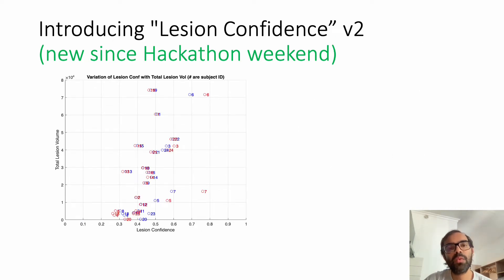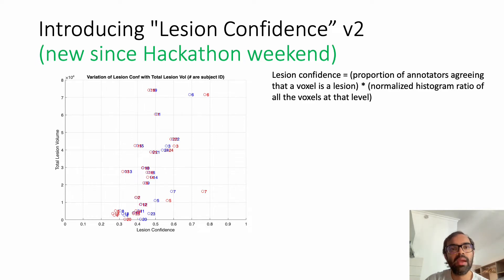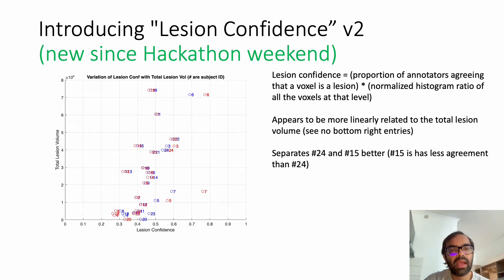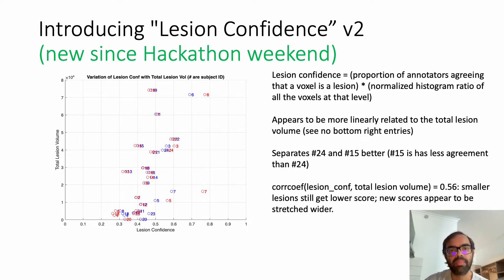So how does this new histogram impact the lesion confidence scatter plot we saw earlier? The definition is the same — it's just applied to the new histogram. It appears to be a little more linearly related to the total lesion volume and separates subjects where there's a visual difference in uncertainty even more than the previous version. The correlation coefficient is slightly smaller; however, the new scores appear to stretch the confidence scores wider. For example, subject 6 and subject 7 are now much farther away from the mean than they used to be.